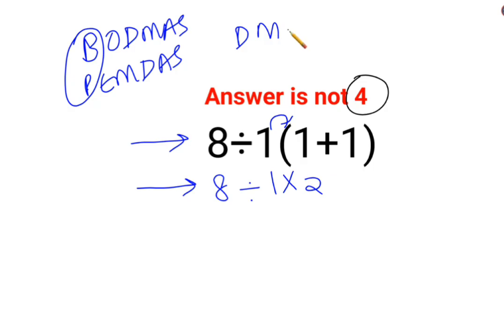division and multiplication always hold equal precedence. So in sums like these, you just go from left to right. Whatever operation happens first on your left hand side has to be done first.